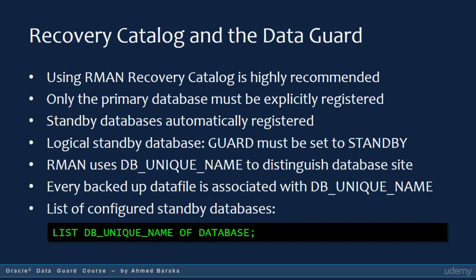It is highly recommended to use the RMAN recovery catalog for your backup and recovery plan in a Data Guard configuration. When you do that, you can use a backup taken from one database to recover another database. If you do not use the recovery catalog, each database in your configuration knows nothing about the backups taken in the other databases. When you want to register your Data Guard configuration databases in the recovery catalog, you need to register only the primary database. For the standby databases, once you connect to them as target in the RMAN command prompt, they will automatically be registered in the catalog.